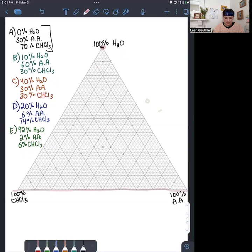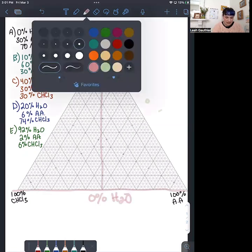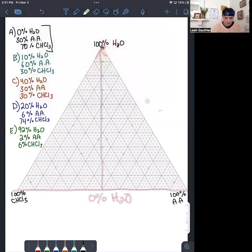So the further you move up vertically, the higher the percentage of water in the mixture. And that works analogously for the other three components.